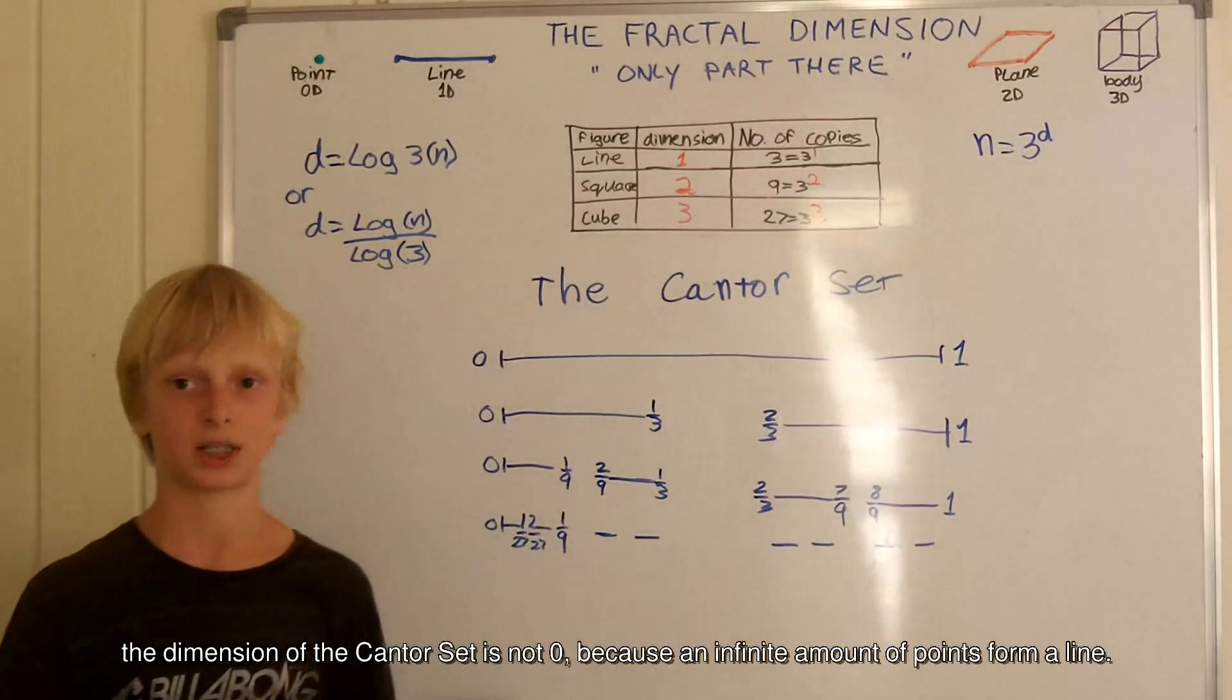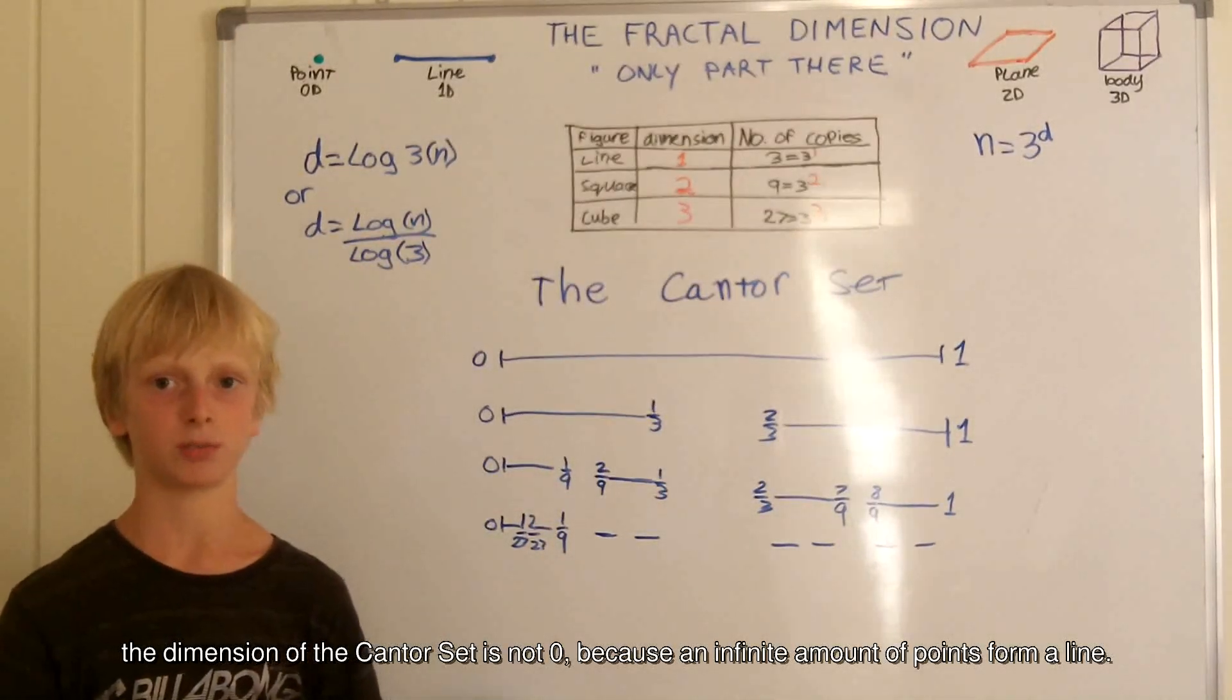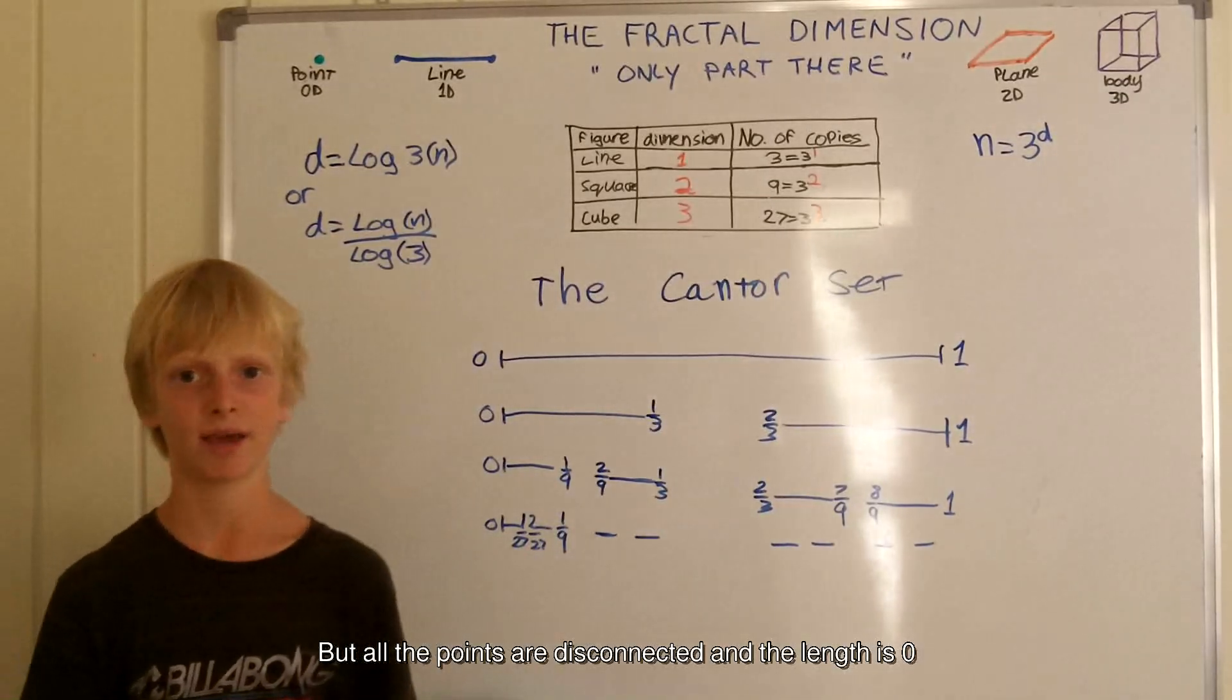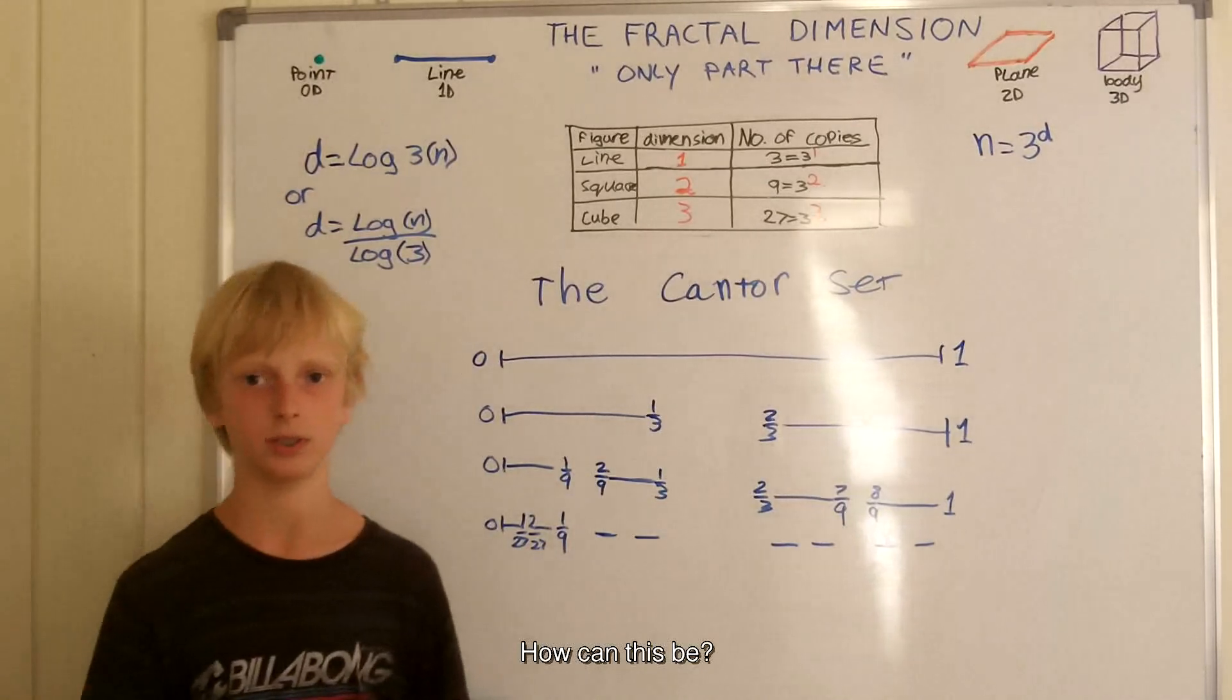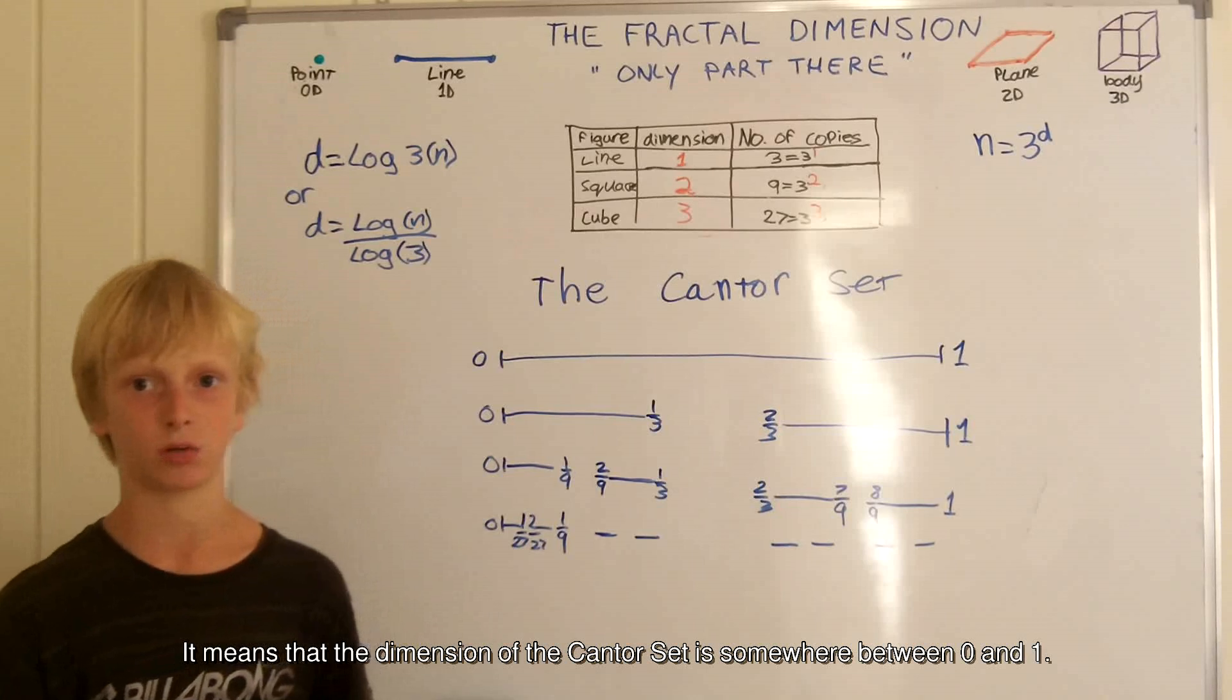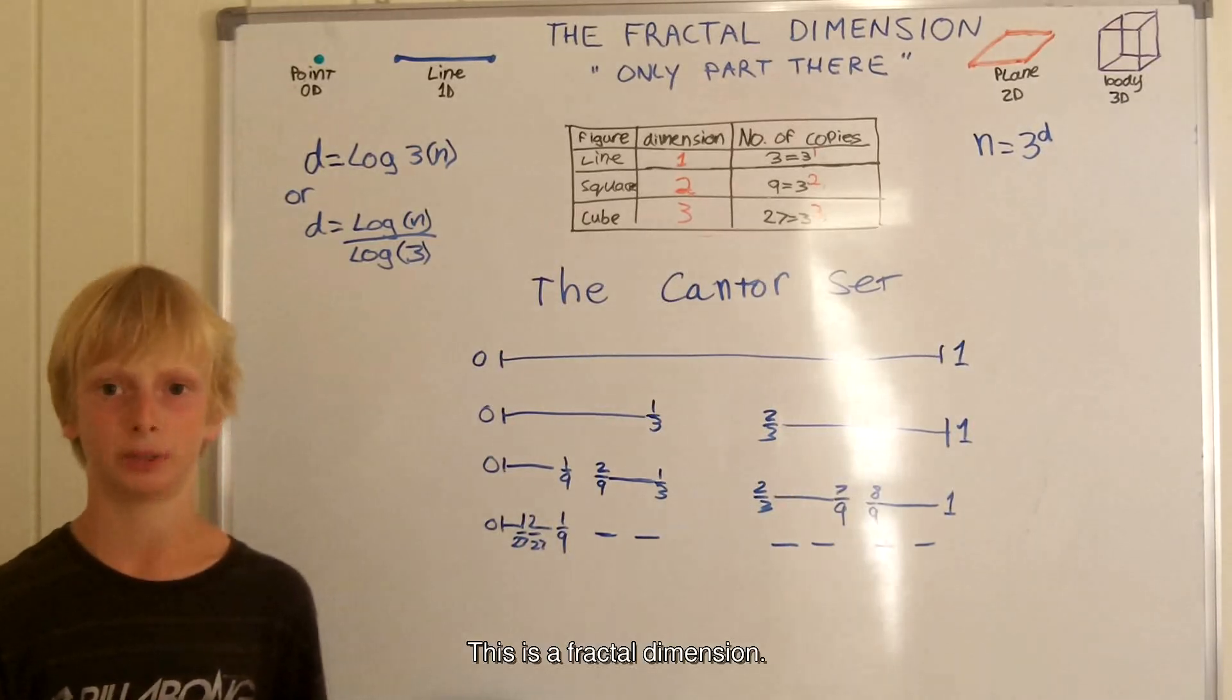The dimension of the Cantor set is not 0, because an infinite amount of points form a line. But all the points are disconnected and the length is 0. How can this be? It means that the dimension of the Cantor set is somewhere between 0 and 1. This is a fractal dimension.